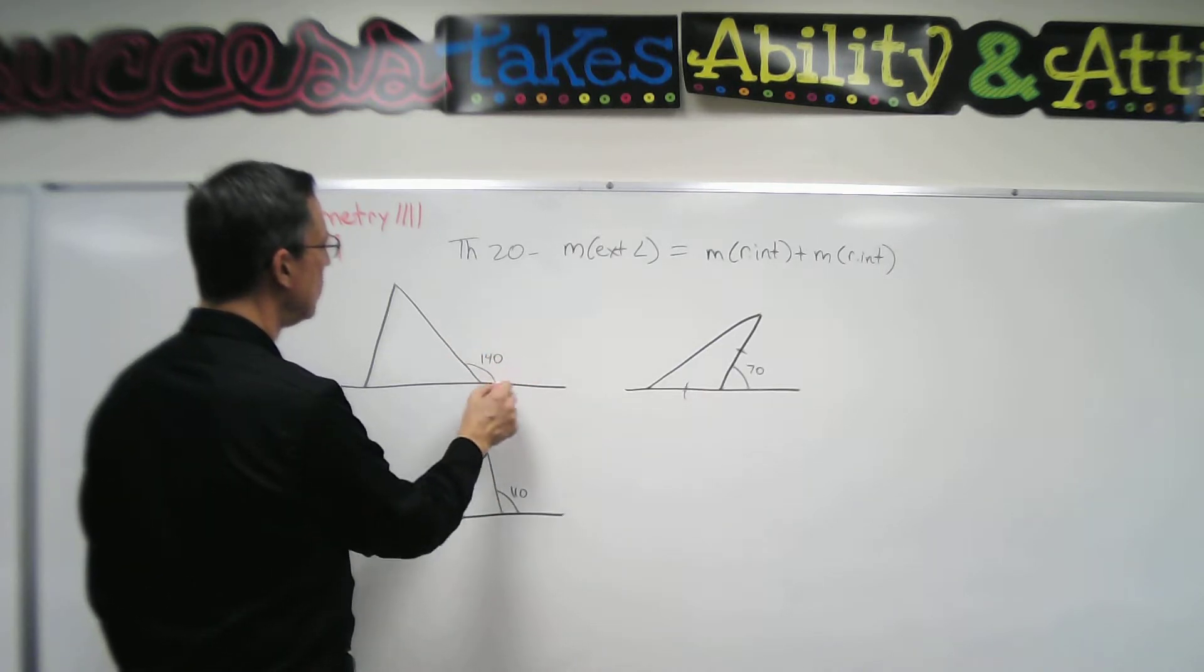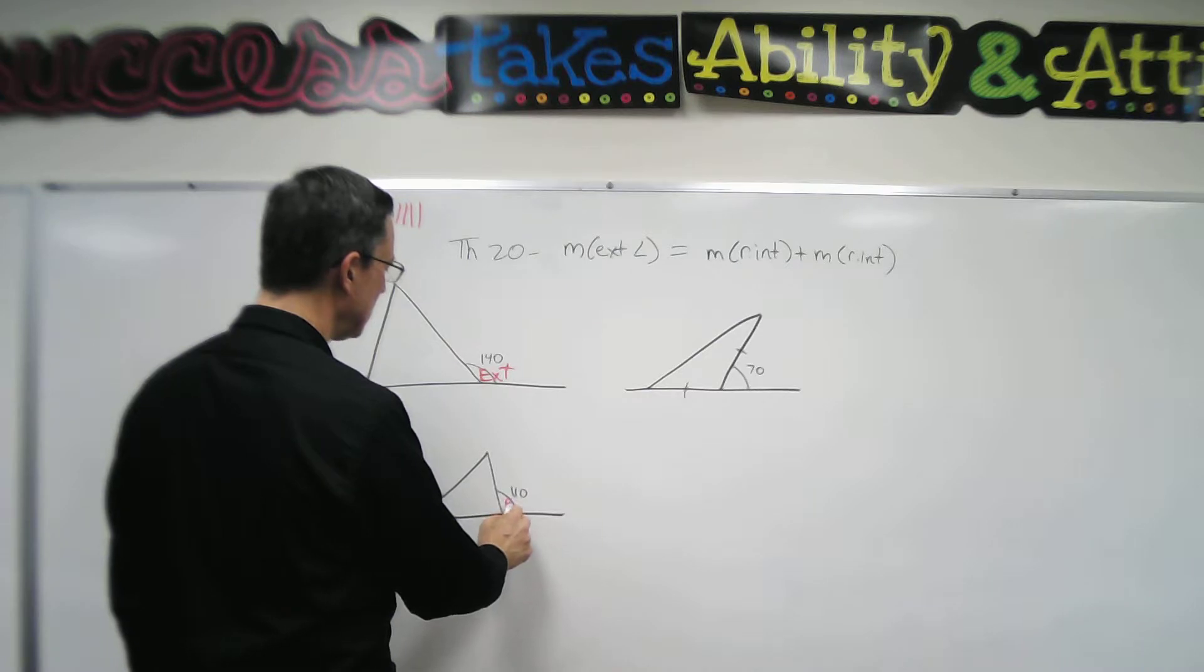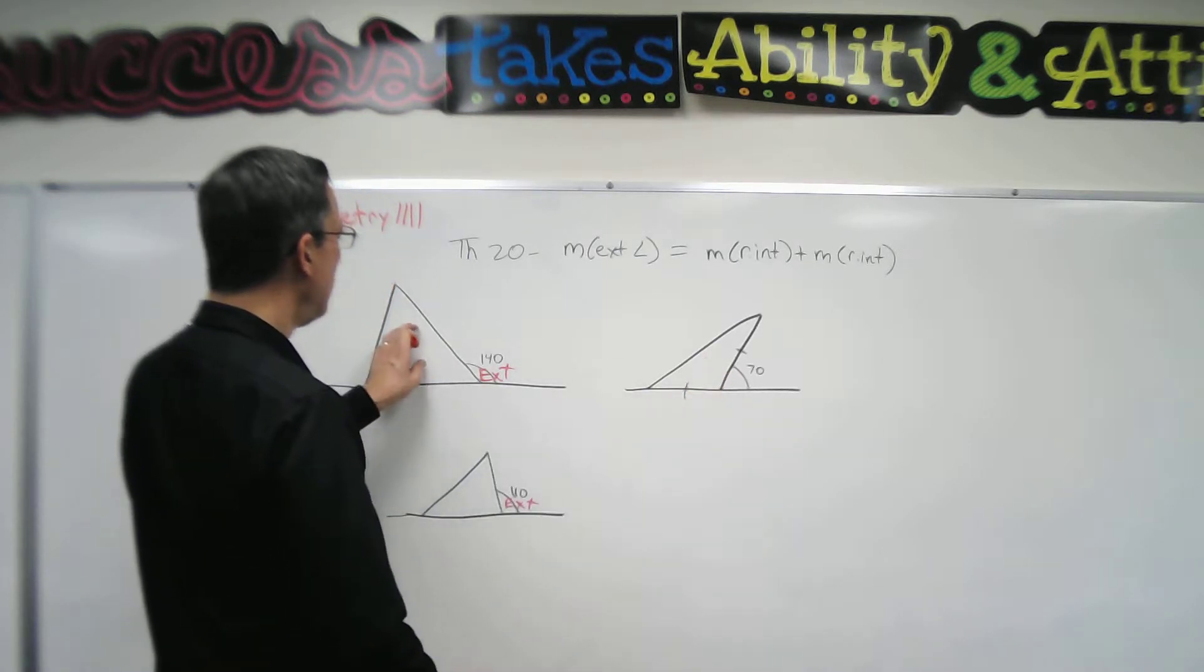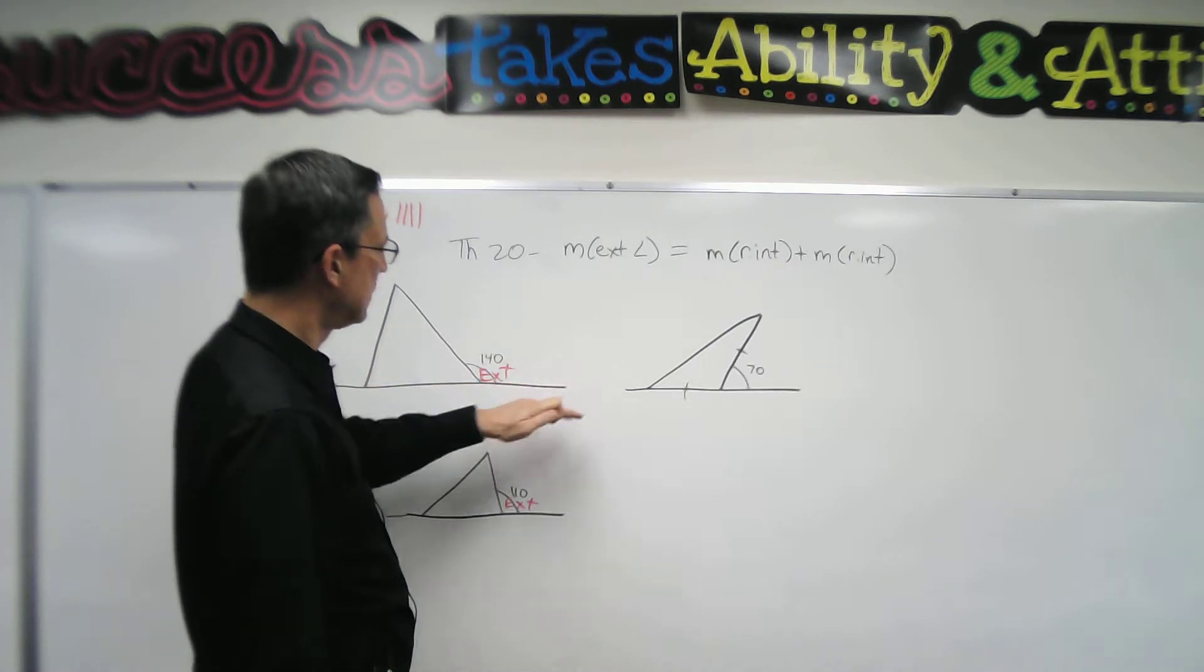This out here is called the exterior angle. Here is an exterior angle. So it's outside the triangle and it's along the base.